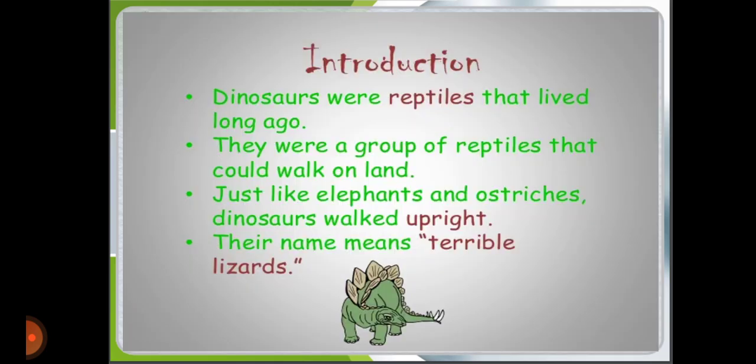Dinosaurs were reptiles that lived long ago. They were a group of reptiles that could walk on land, just like elephants and ostriches. Dinosaurs walked upright, and their name means terrible lizards.